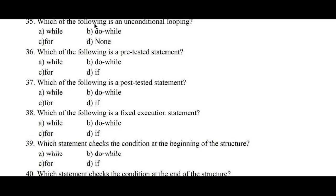Question number 35: Which of the following is an unconditional looping? Option A. While, B. Do-while, C. For, D. None. So unconditional looping construct is For. Hence C is the right answer. Question number 36: Which of the following is a pre-tested statement? Option A. While, B. Do-while, C. For, D. If. So here while is going to check the condition before the control enters into the body of while. Hence option A, While, is the correct answer.